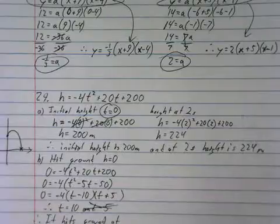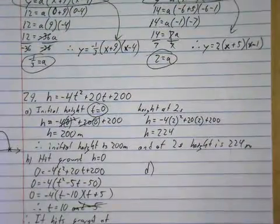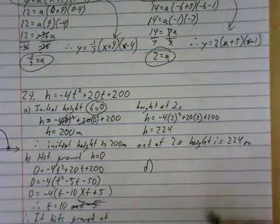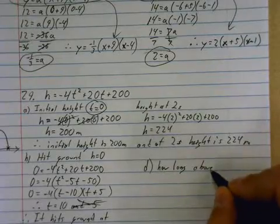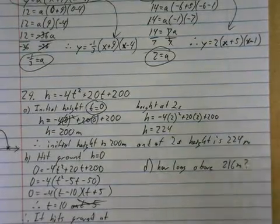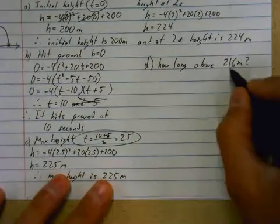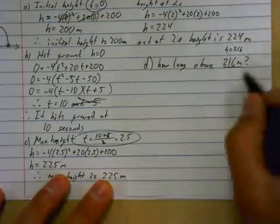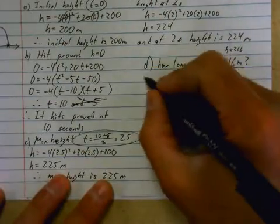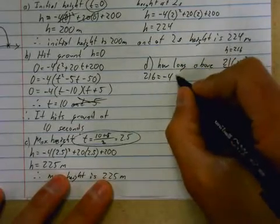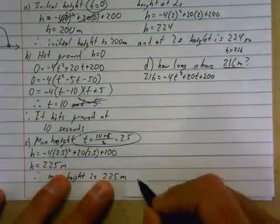Last one is a pain in the butt. I'll go through it as quickly as I can. Calculate the length of time the jar is above, so how long above 216 meters? In this case, they give us a height. They're giving us the height equal to 216. So substitution, every time they give us a value, I plug it in for that value. So 216 = -4t² + 20t + 200.